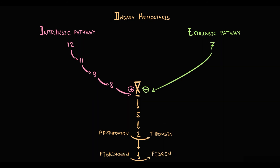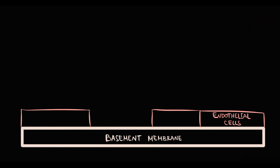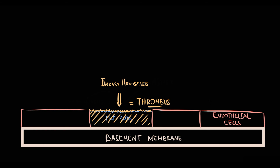Fibrin makes from the platelet plug a formidable thrombus. So to repair the damage, primary hemostasis initially makes a platelet plug, and then secondary hemostasis converts that platelet plug into a formidable thrombus that covers the damaged area until it is repaired. This is the entire logic of our coagulation system.